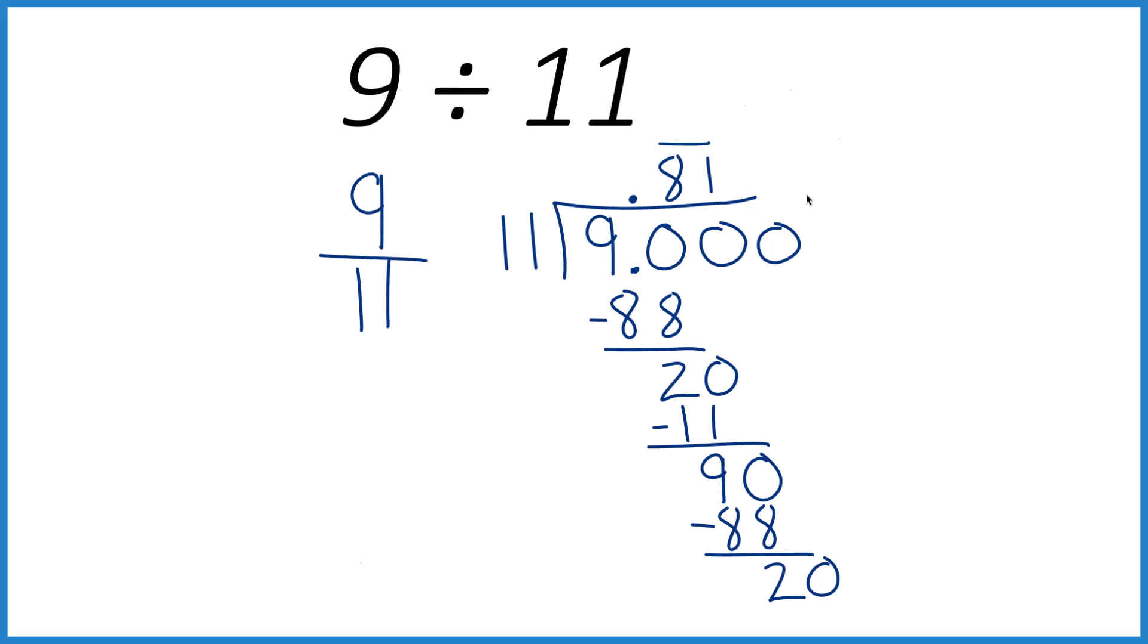So let's get rid of this. And that's our answer. 9 divided by 11 is 0.818181, and the 81 just keeps repeating.